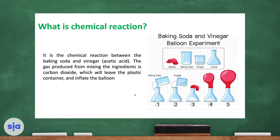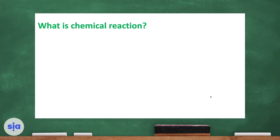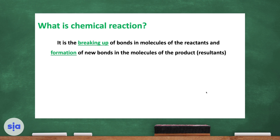A chemical reaction happened between the baking soda and the vinegar — two ingredients forming a new product, which is the carbon dioxide gas. The balloon is only an indicator that detects the presence of the carbon dioxide gas. We can define a chemical reaction as the breaking up of bonds in molecules of the reactants and the formation of new bonds in the molecules of the product.